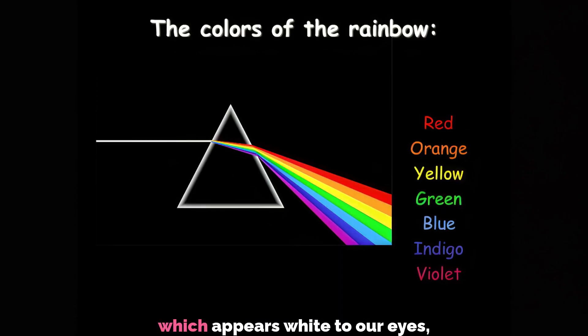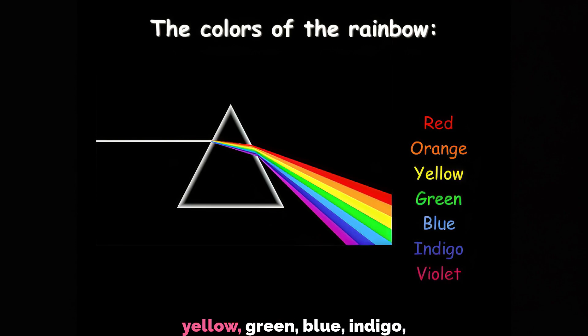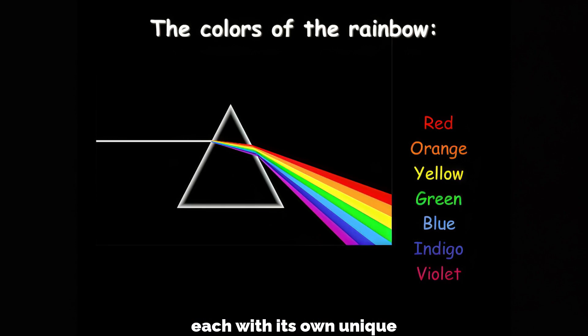This light, which appears white to our eyes, is actually comprised of a spectrum of colors. It consists of red, orange, yellow, green, blue, indigo, and violet, each with its own unique wavelength.